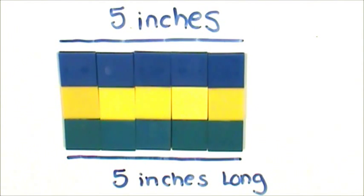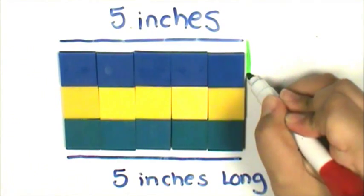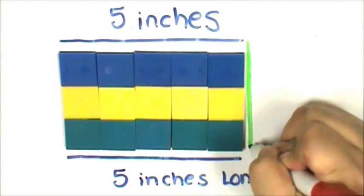Now I'm going to trace the width of the array. The width is 1, 2, 3 inches long.